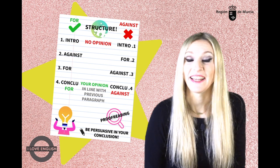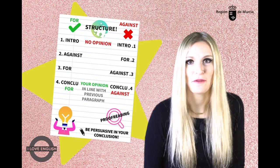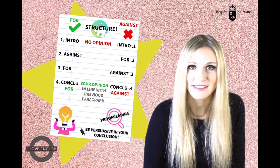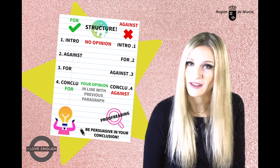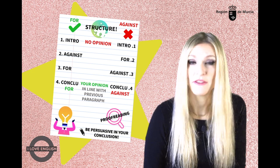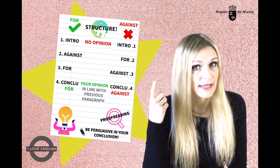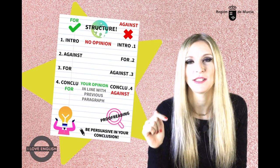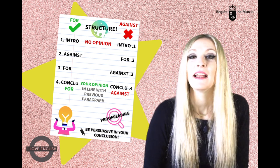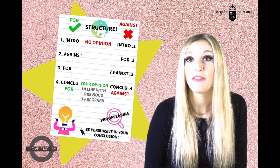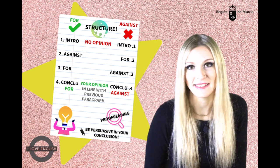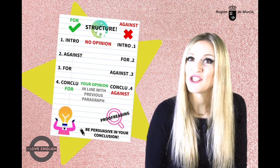Follow the structure I gave you: an introduction where you must never give your opinion, two paragraphs with arguments both for and against the original statement giving facts and details, and a conclusion justifying your opinion and being persuasive to convince the reader. Remember, if you're in favor of the original statement, then you should start giving arguments against it, then move on to arguments in favor to draw your conclusion in favor too. If your opinion is against the topic, then you should begin with arguments of those who are for it, then move on to arguments against it, and wrap it up with a conclusion against it too. Don't forget to give your opinion and justify it in the conclusion.